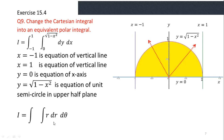The limits of r are 0 to 1. For the limits of θ: our region starts at a point where the angle with the x-axis is 0, and in the counterclockwise direction our region ends at the point where the angle is 180°, which we write as π. So the limits of θ are 0 to π. After calculating the limits we can evaluate this polar integral.